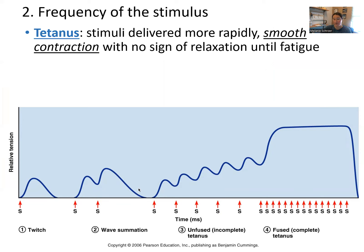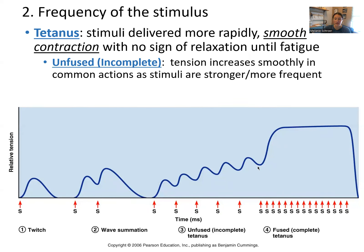This graph is showing four different scenarios. Here's a single twitch — the stimulus, brief latent period, contraction, relaxation. In wave summation, two twitches are summed together. We see the second stimulus arrive before full relaxation, and so the second one is a little bit stronger than the first. You wouldn't experience two different twitches here — you would experience one single twitch. If you just keep stimulating that muscle cell, the contraction gets stronger and stronger, and this scenario is called unfused or incomplete tetanus.